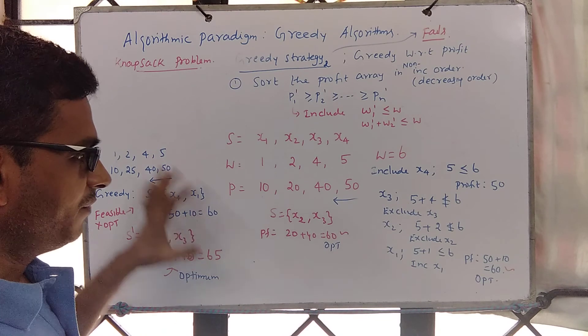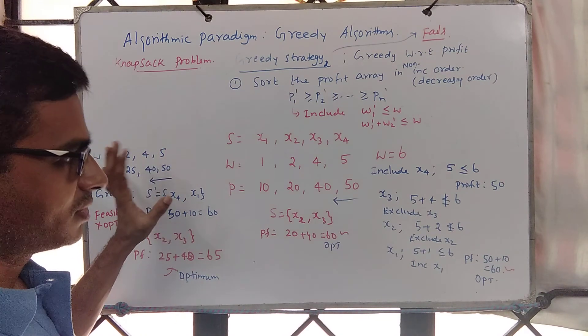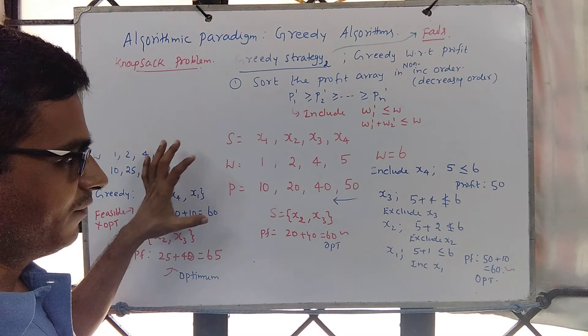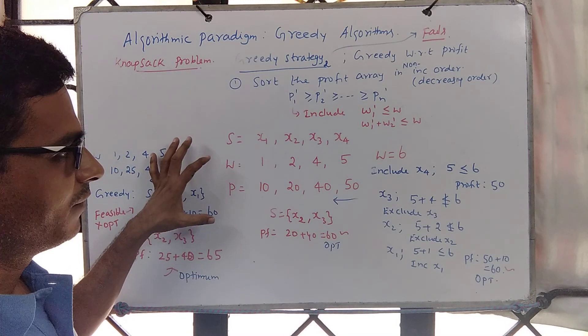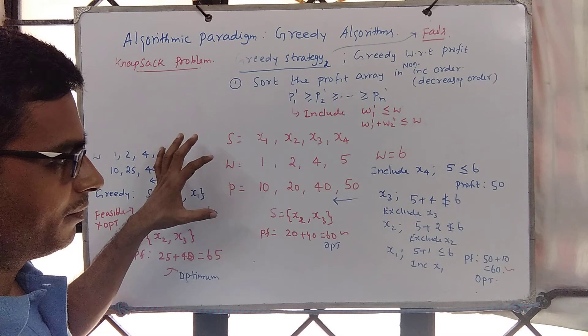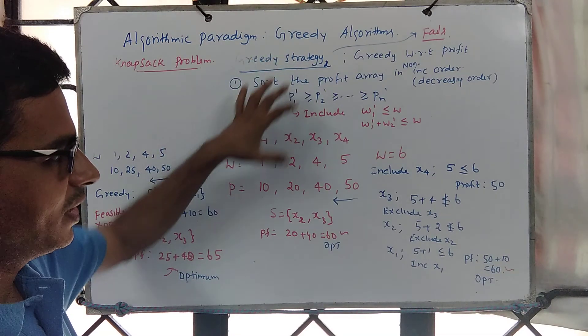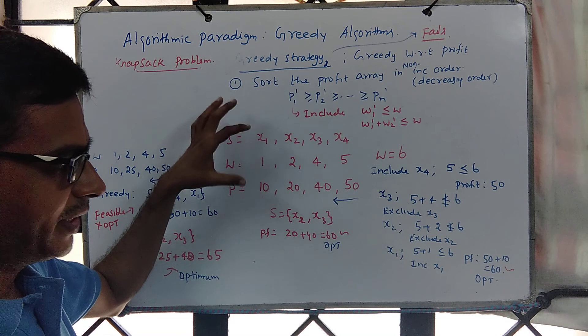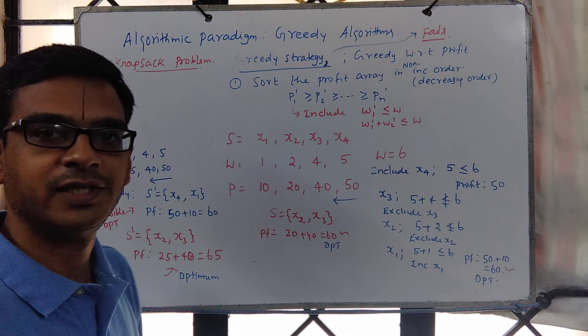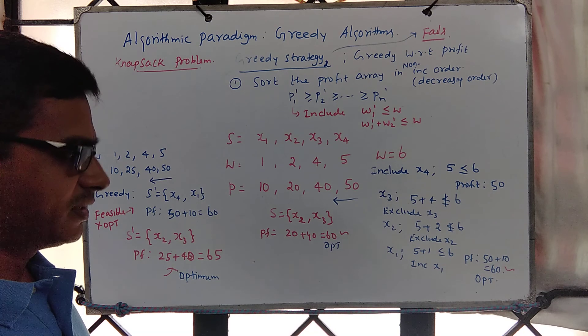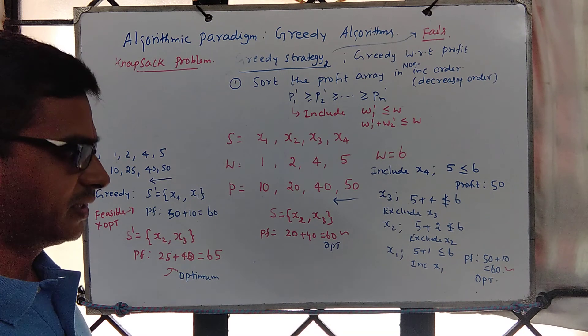Okay, so we have seen two strategies and both are not working. Can we look for a strategy which kind of brings good practices of strategy one and strategy two, something like a blend of strategy one and strategy two? So think through that. Let's experiment that strategy next.